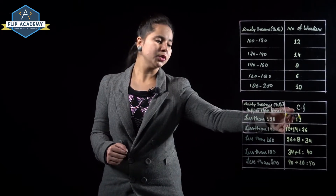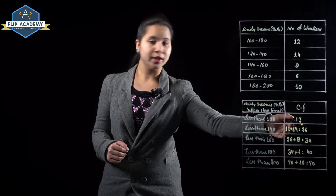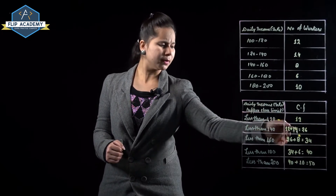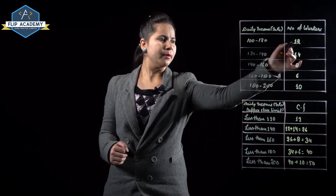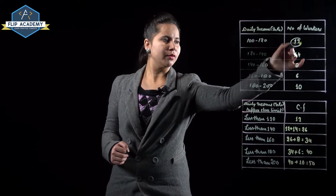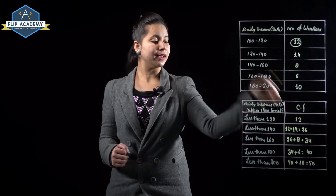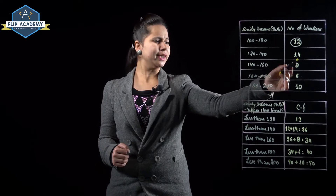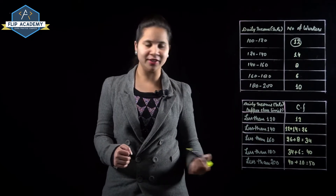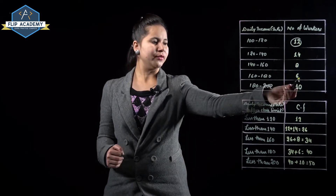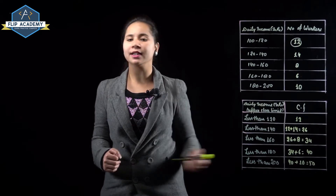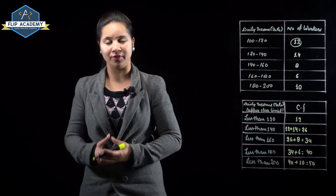The cumulative frequencies are calculated as: 12 as usual, then 12 + 14 = 26, then 26 + 8 = 34, then 34 + 6 = 40, and finally 40 + 10 = 50.